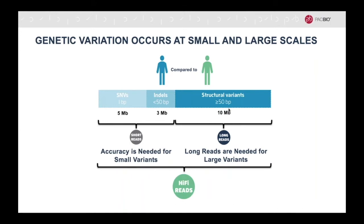With HiFi reads, you no longer need to choose between read accuracy and read length. You can now get highly accurate long reads that can discover all variant types, ranging from single nucleotide variants to large structural variants.